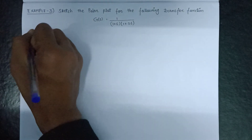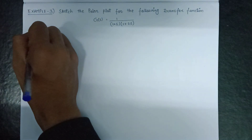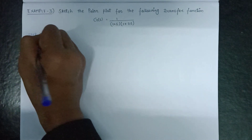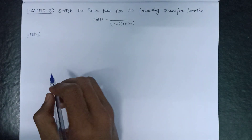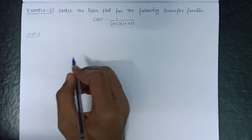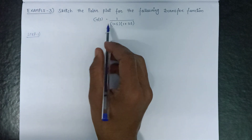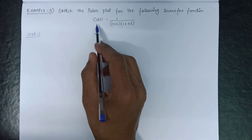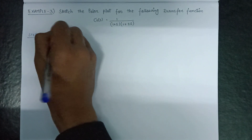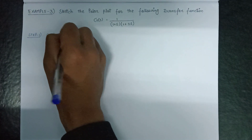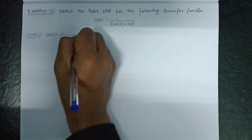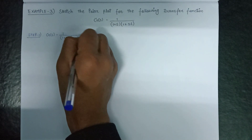We will follow all 5 steps to plot the polar plot. Moving on to step number 1, that is determination of open loop transfer function. Since the open loop transfer function is given as G(s), the open loop transfer function equals 1 / [(1 + s)(1 + 2s)].